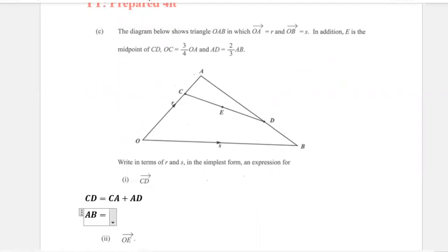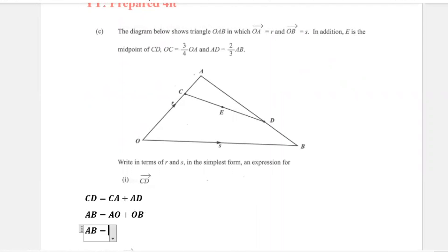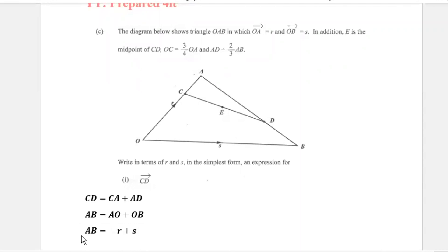So AB equals AO plus OB. AO would be negative R, and OB would be S. So AB equals negative R plus S. And since AD equals 2 thirds of AB, we can now substitute this into our formula.